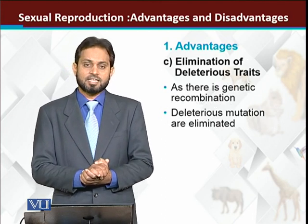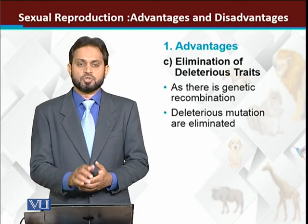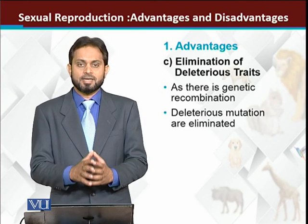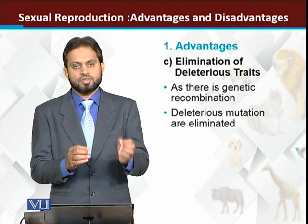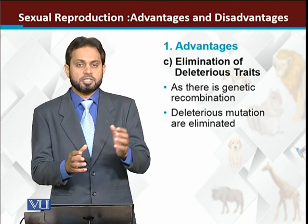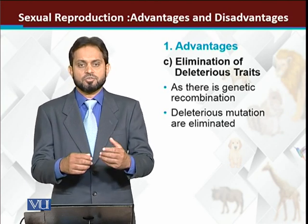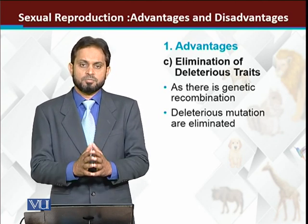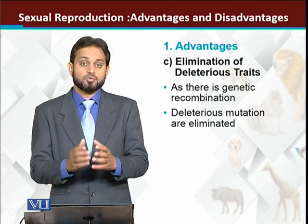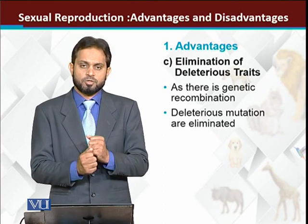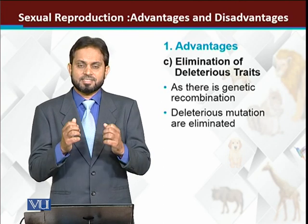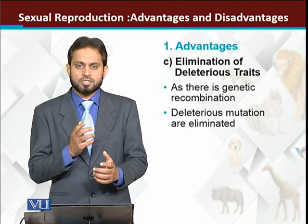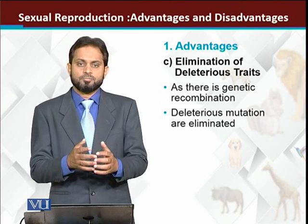The third advantage is the elimination of deleterious mutations. Mutations are a constant phenomenon — our genome is affected by different factors like chemicals, radiation, and DNA replication errors. Sexual reproduction, through genetic recombination and gene reshuffling, helps eliminate mutations that are dangerous while preserving those that are beneficial.